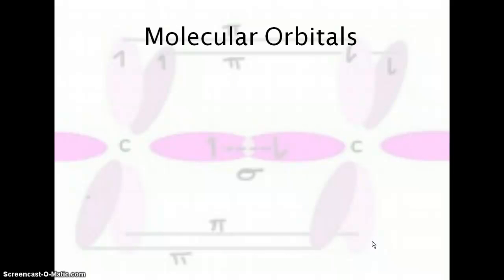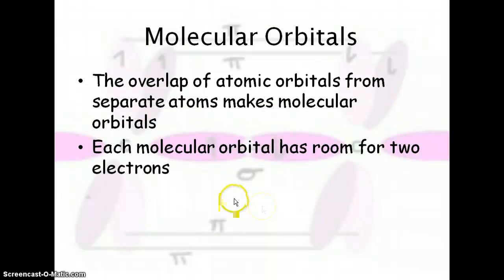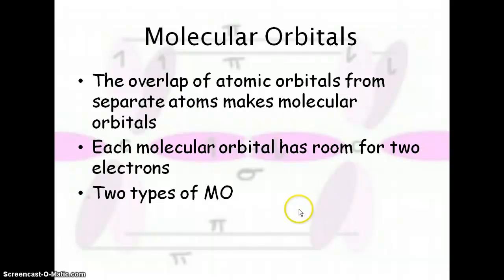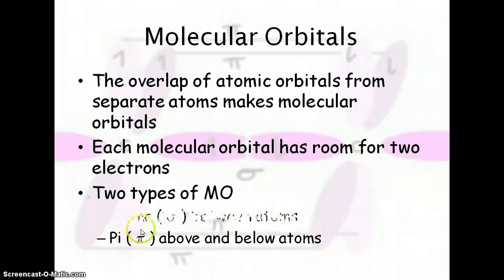This leads us to what's called molecular orbitals. Molecular orbitals are when you have atomic orbitals — s, p, d, f — from separate atoms and they combine and hybridize to make a molecular orbital. Each molecular orbital is going to have room for two electrons. There are two types: sigma, which are between bonds, and pi, which are above and below atoms.